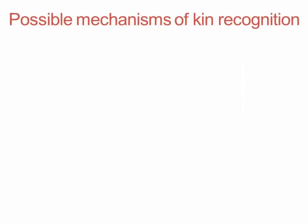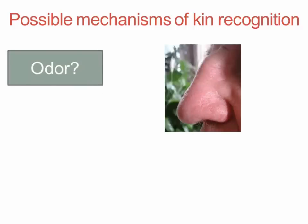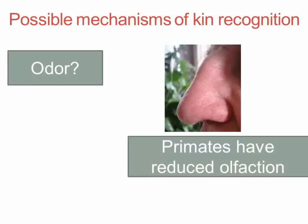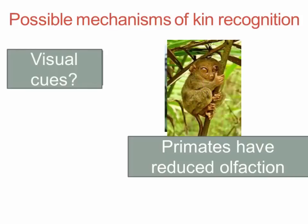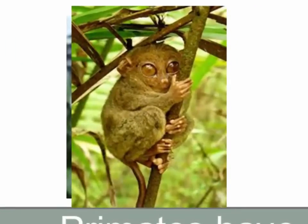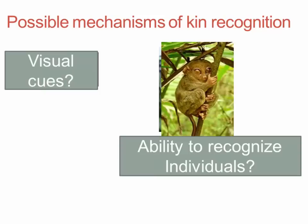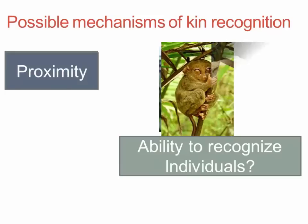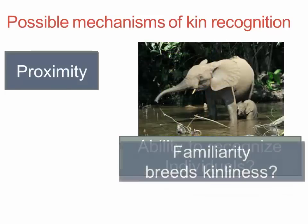A conclusion from a recent review of primate behavior with regard to kin is that in a wide variety of primate species, males sometimes care for offspring to whom they are unrelated. A number of possible proximate mechanisms of kin recognition have been proposed. One of those is odor, which might be true of other primates but probably isn't true of humans, because primates as a whole have reduced olfaction — our sense of smell really isn't very good. It's also been suggested that visual cues are important, and certainly primates have great vision.